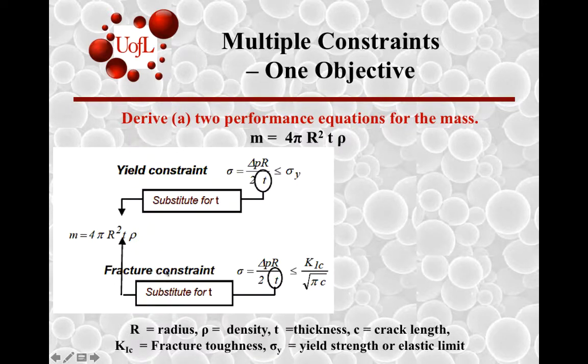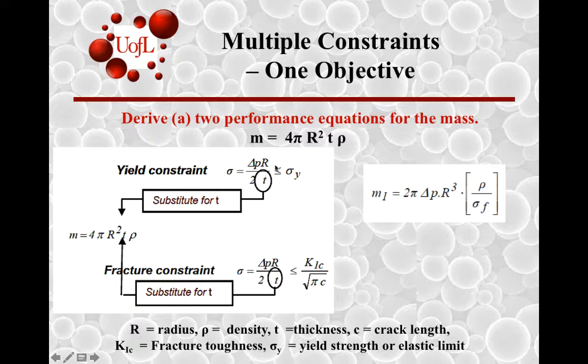For the second constraint, then we will use the fracture constraint where this term, the wall stress, should be at best equal to K_IC over pi c. For the fracture constraint, using the first derivation where you combine the yield constraint with the objective of minimizing mass, you get a mass which is a product of the functional index, the geometric index R cubed times 2 pi, and then the material index rho divided by sigma f.